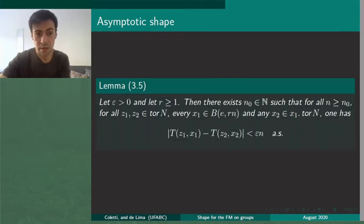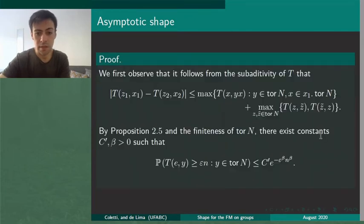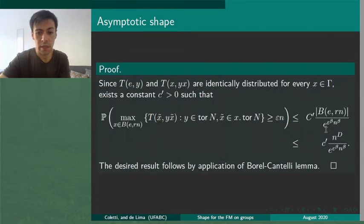This lemma gives us information about the growth of the process and the comparison between elements of each coset given by the torsion subgroup. We prove it using the subadditive property of T and it follows from the at least linear growth that we can apply a Borel-Cantelli lemma to prove it.